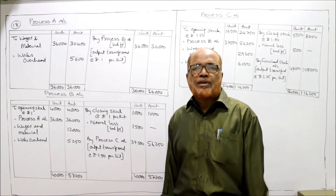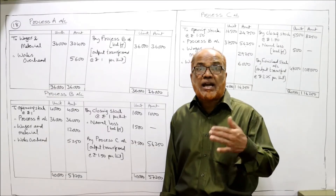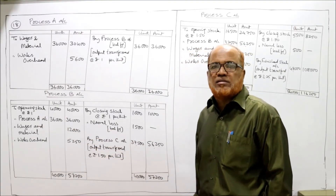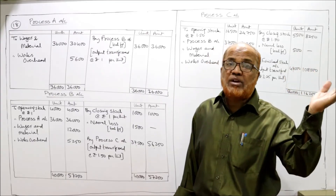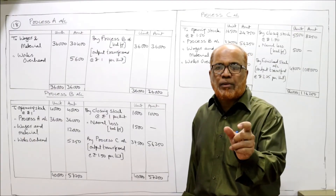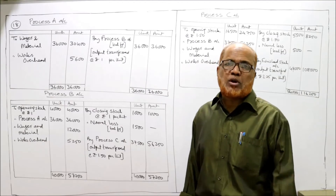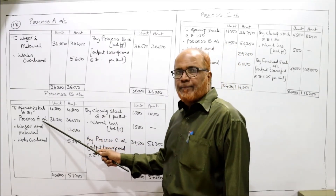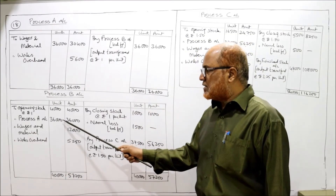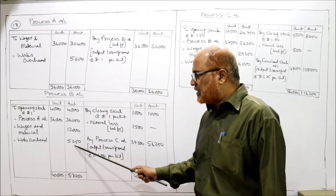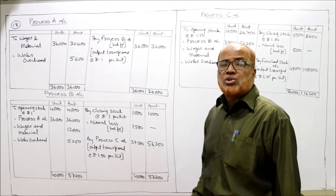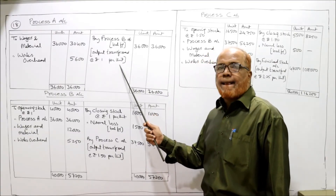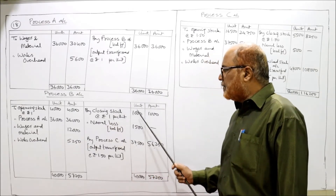In process B account, we first take the opening stock: 4,000 units given in the problem, coming from the previous process A. The previous process cost per unit is 1 rupee, so 4,000 into 1 equals 4,000 rupees. Input from process A: 36,000 units, 36,000 rupees. Wages and material: 12,000 rupees. Works overhead: 5,250. Total debit side: 57,250. Closing stock in process B is 1,000 units — valued at 1 rupee each, both opening and closing stock are valued at the preceding process rate — so 1,000 rupees.